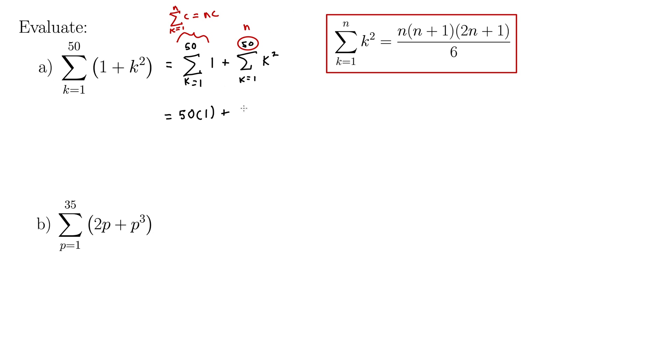So our n is 50, so we have 50 times 50 plus 1, which is 51, times 2 times 50 plus 1, 101, all over 6. Run that all into a calculator. Turns out we get 42,975.